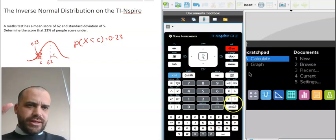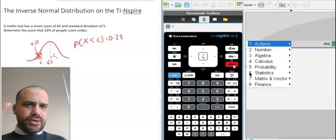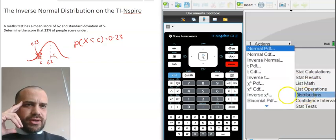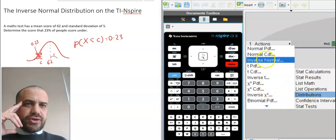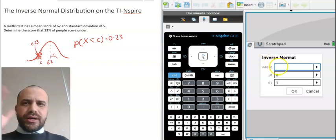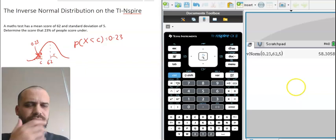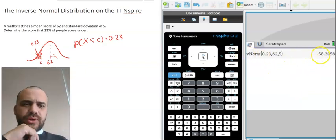So I'm just going to jump into calculate here. And then I'm going to go menu and statistics, distributions, and I'm going to go for inverse normal. And now I just need to type in exactly what my diagram says. Area 0.23, mean of 62, and a standard deviation of 5. And I get an answer, inverse normal, 58.3.